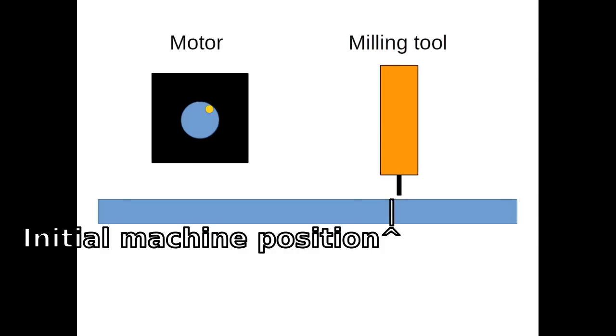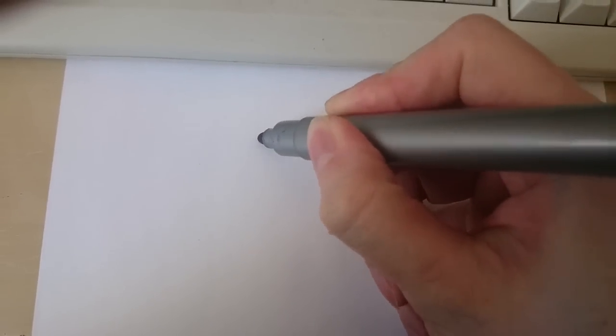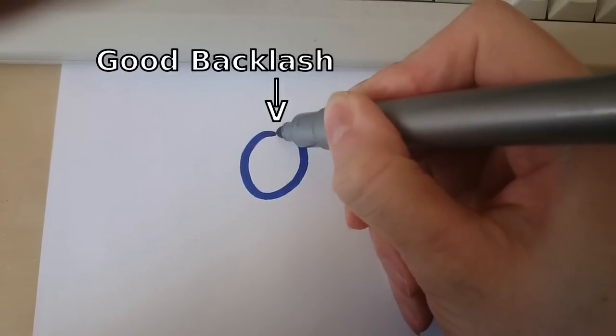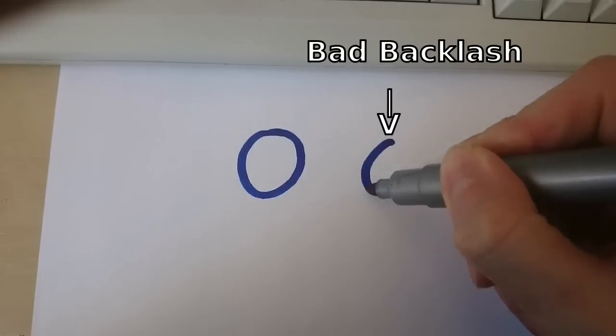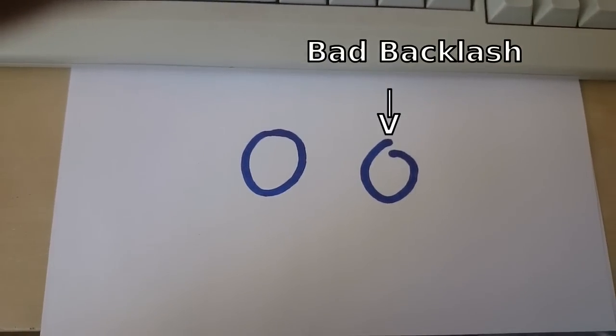Somebody at the Hackaday forum recommended to measure the backlash of the machine. The backlash defines how far the motors of the machine can move without the workbed moving and it needs to be as low as possible. He recommended to mill a circle and then carefully check the position where the start point meets the end. Sounds like a good idea to me.